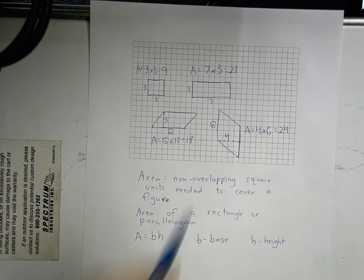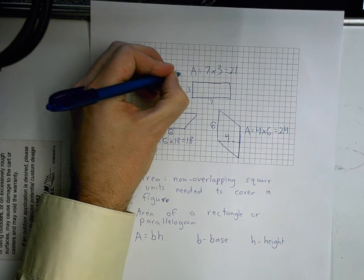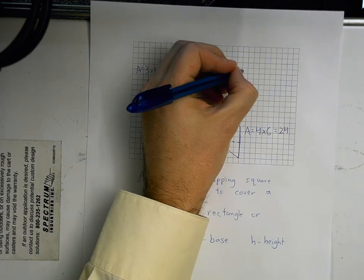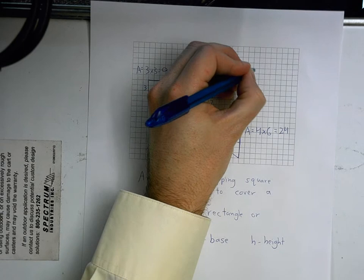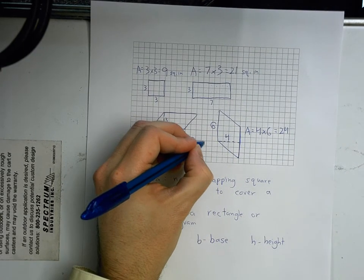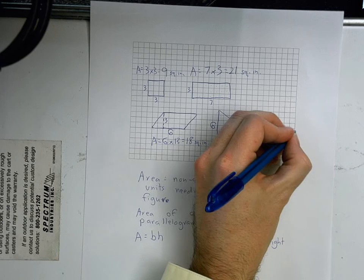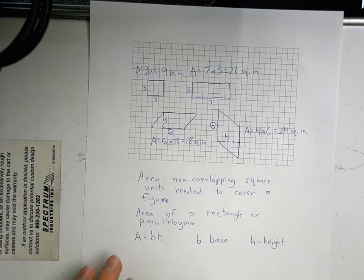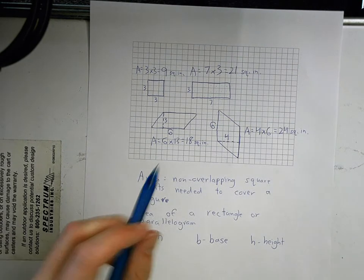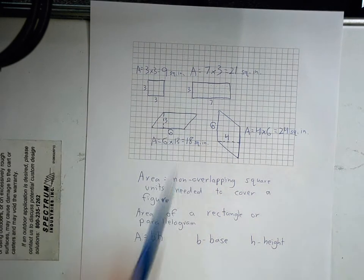See how they're in squares? That's why we call them squared units. So like area, this would be nine square inches if I was doing this in inches. 21 squared inches. 18 squared inches. And 24 squared inches. All right? Cause it's not just going in one direction. The square inch goes in two directions. Right?